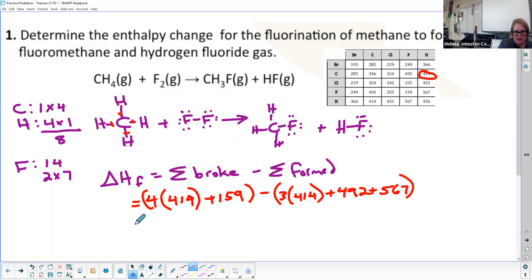So I am now ready to grab my calculator. I'm going to have four times 414 plus an additional 159. I'm going to get that value, then subtract from that three times 414 plus 492 plus 567.